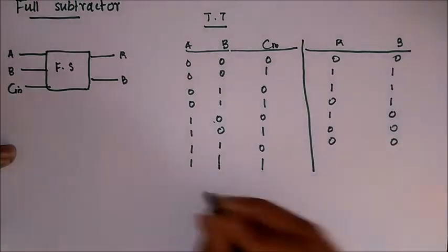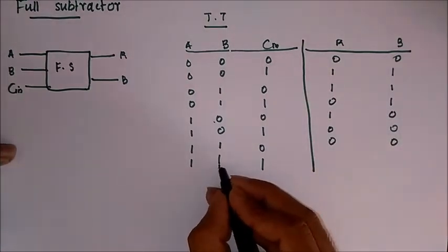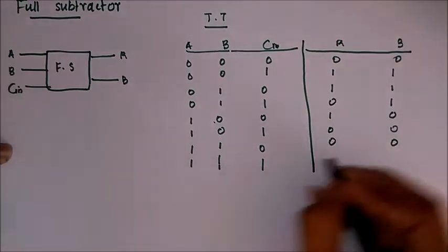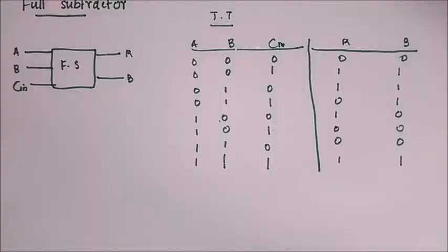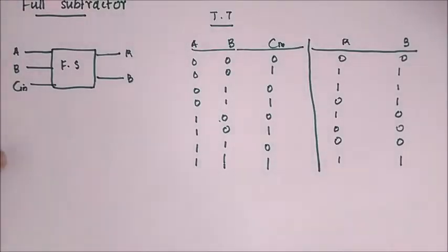1 1 1, 0 0, 1 minus 0, 0, borrow remains 0, 1 minus 1 is 0, and 0 minus 1 is 1 with the borrow of 1. So this is our truth table for a full subtractor. If you know the binary subtraction then it's very easy.